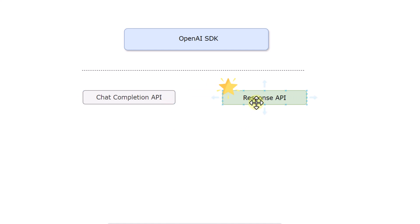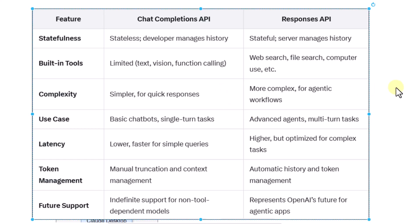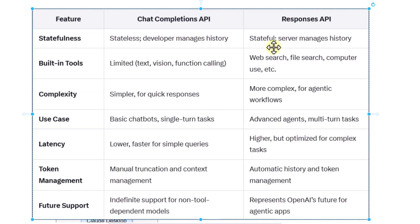Let's check the differences between the Chat Completion API and the Response API. The first difference is statefulness. The Chat Completion API is stateless — the developer has to manage the conversation history manually. In the Response API, there is a built-in mechanism to manage history, so it is stateful.